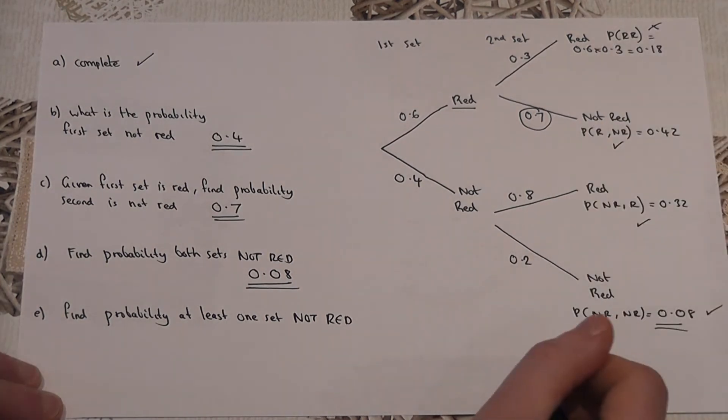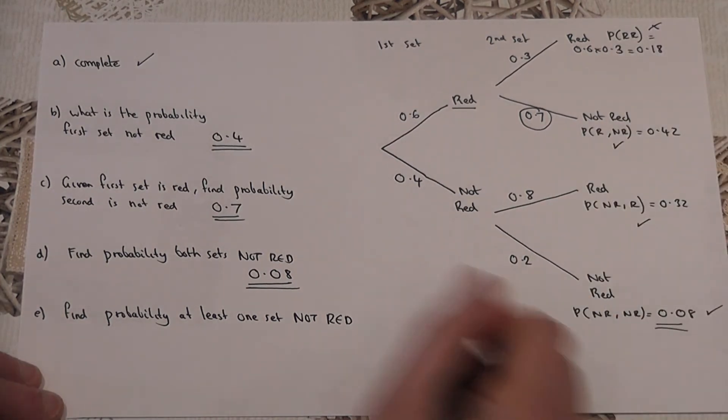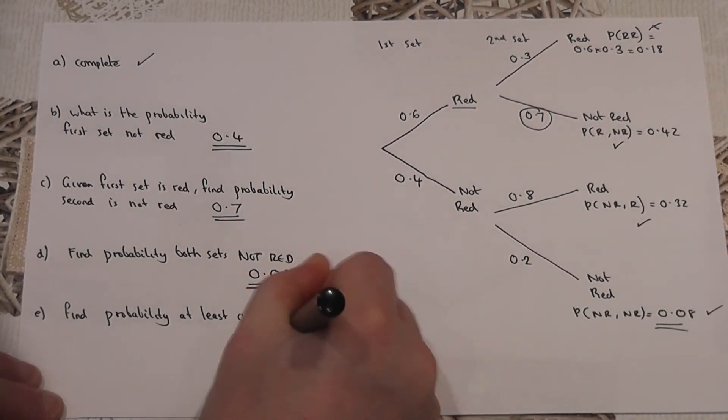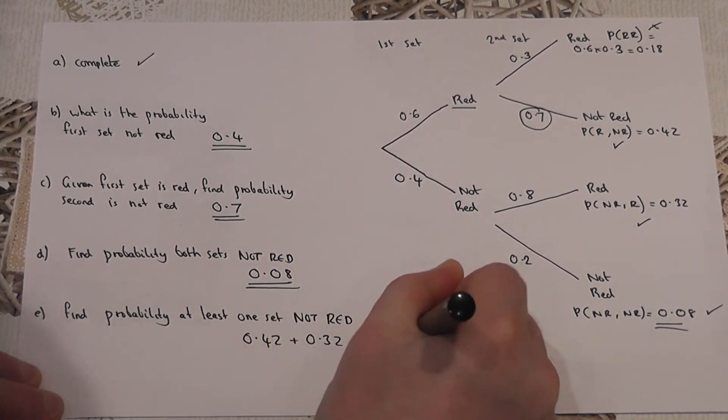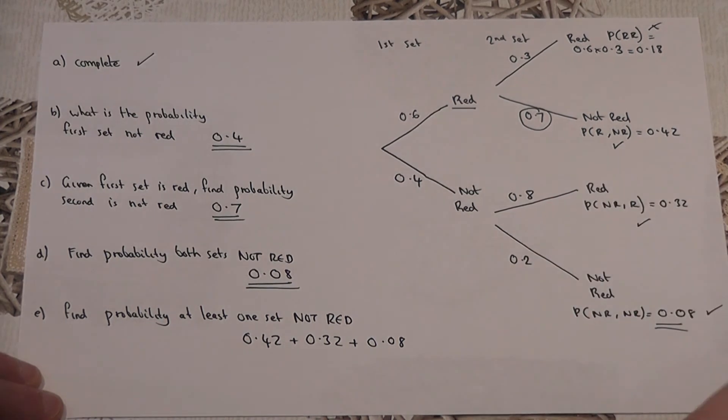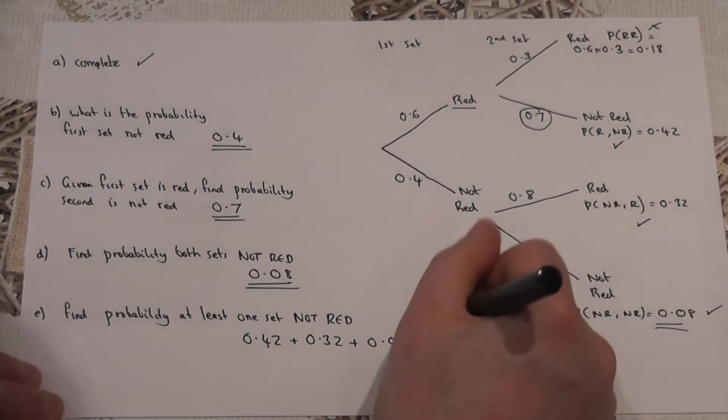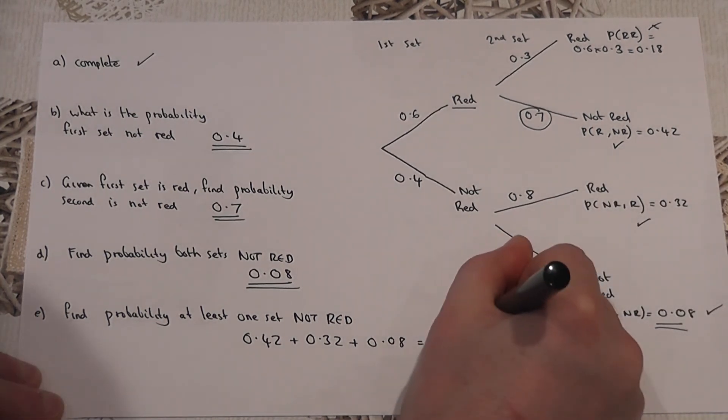So I ignore this one. So to find the answer, I do 0.42 plus 0.32 plus 0.08. So I add together the relevant numbers, which gives me 0.82.